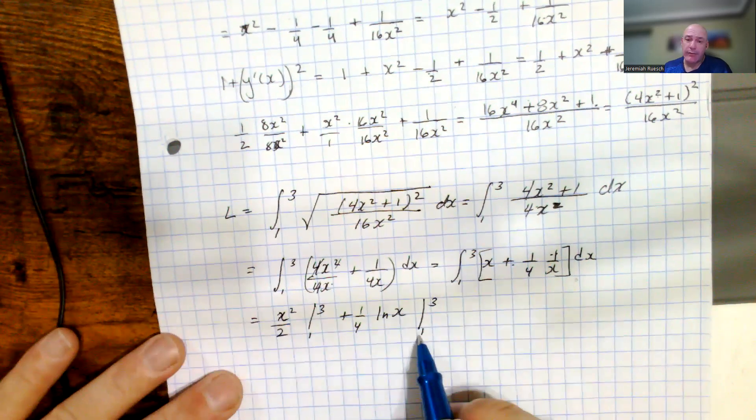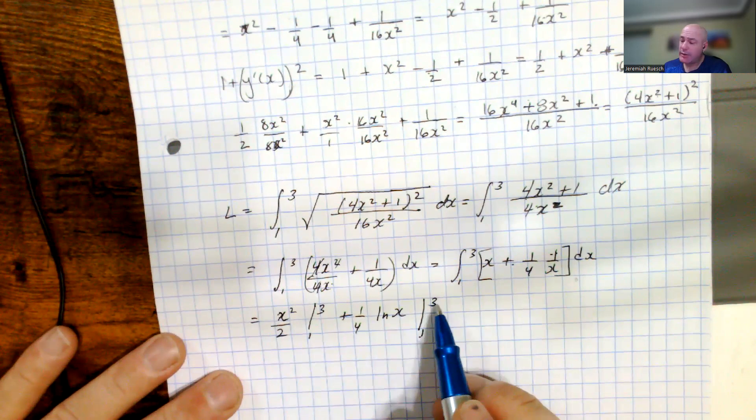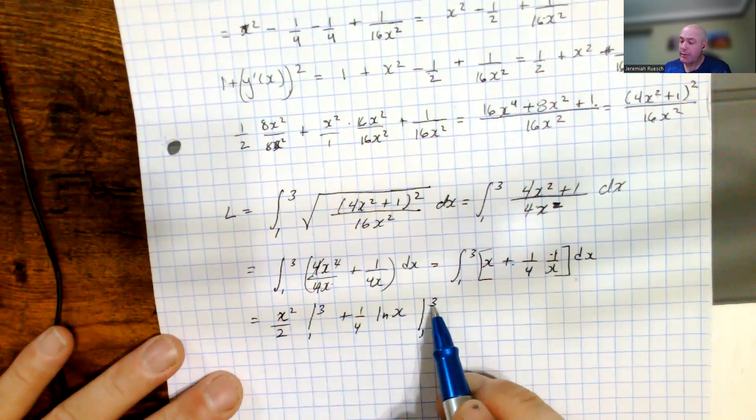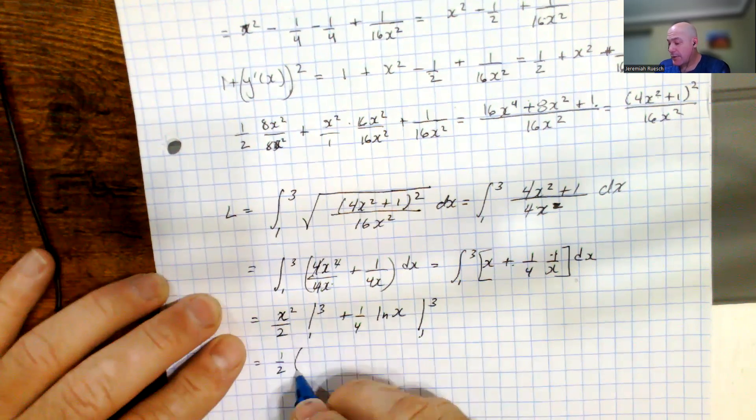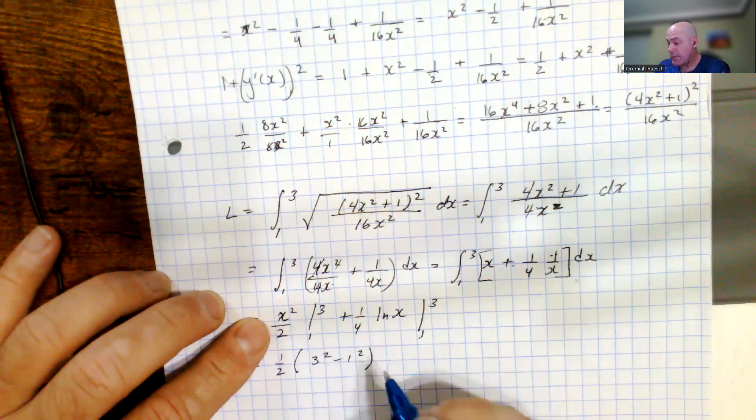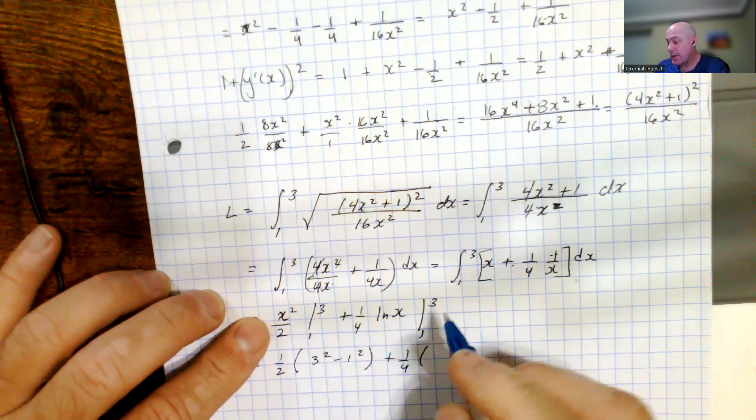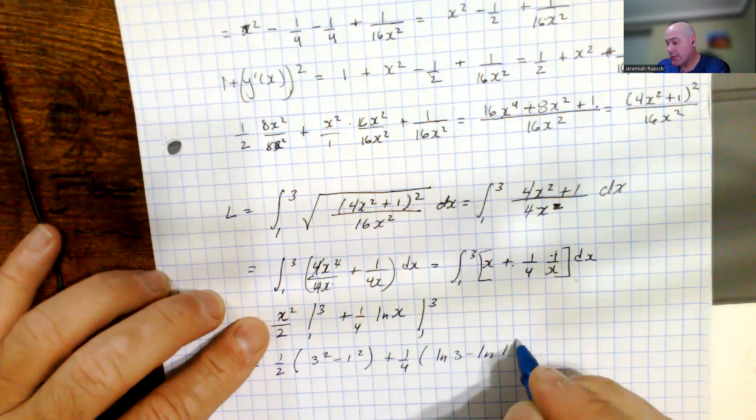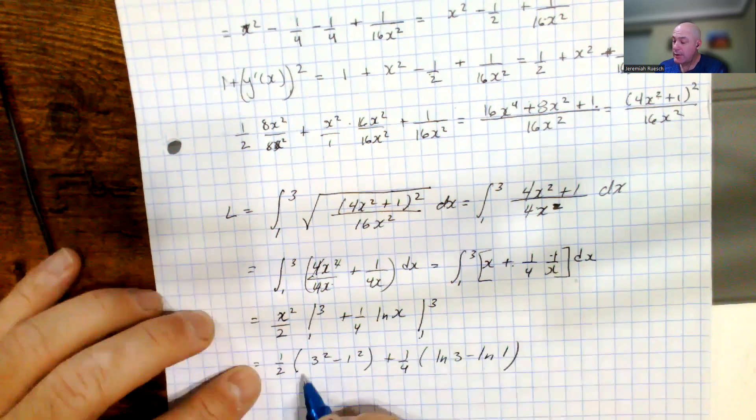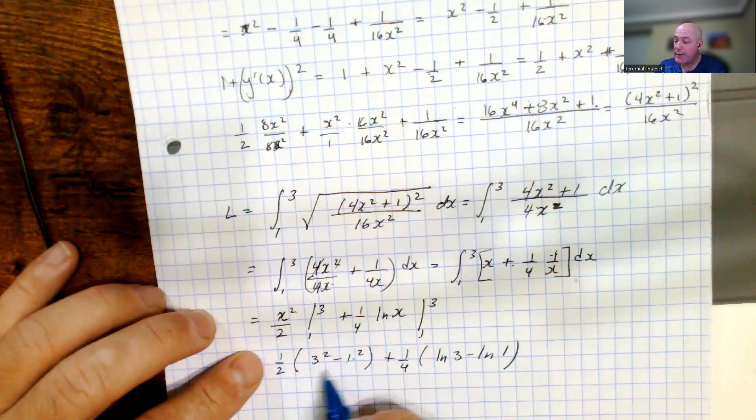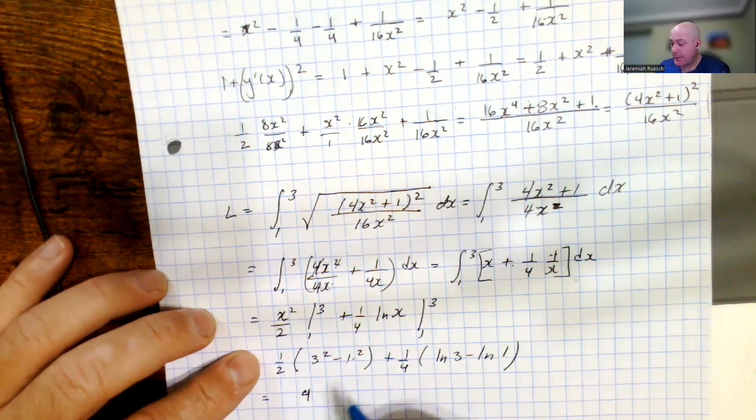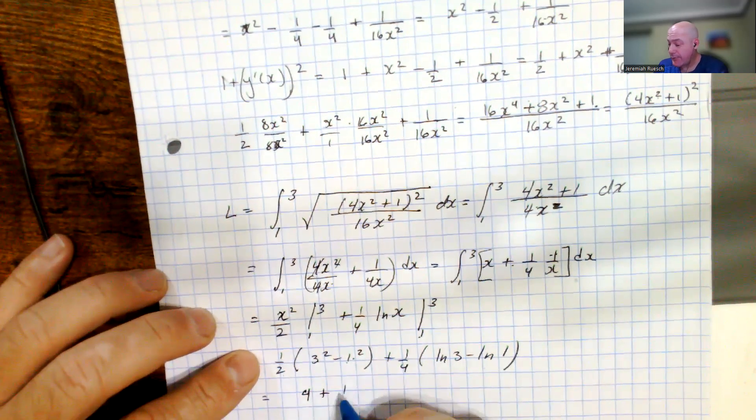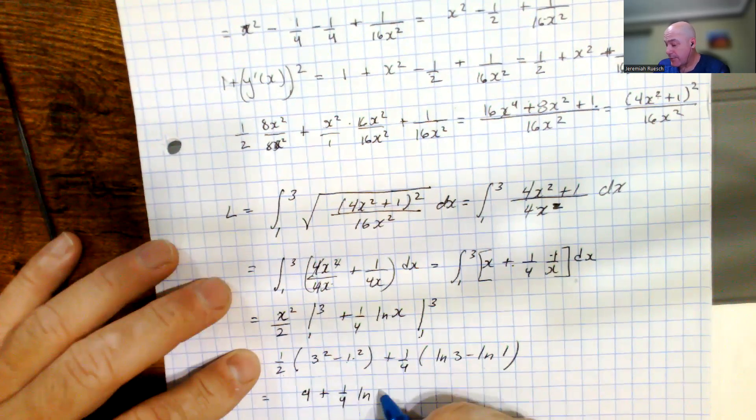Now you'll notice that the natural log of 1 is 0, so we technically don't need to worry about the lower limit of the equation here. And if we plug everything in, we have 1 half, 3 squared minus 1 squared, plus 1 fourth, natural log of 3 minus natural log of 1. Again, this is 0. This is 9 minus 1, so this is 8, half of 8 is 4, and then we have 4 plus 1 fourth natural log of 3.